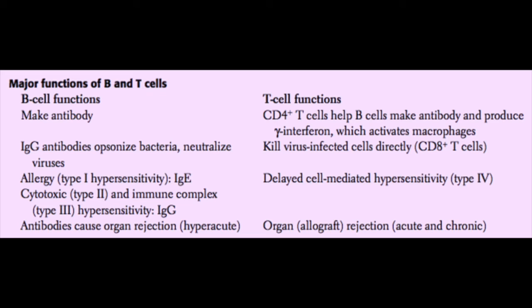T cell functions include CD4 T cells, which help B cells make antibodies and help macrophages become activated through cytokine release — so CD4 helper T cells are involved in cytokine production. CD8 cytotoxic T cells kill virally infected cells through a direct mechanism. T cells are also involved in hypersensitivity, specifically delayed type hypersensitivity or type 4. T cells are involved in transplant rejection but not hyperacute rejection — they are mainly involved in acute and chronic organ rejection.